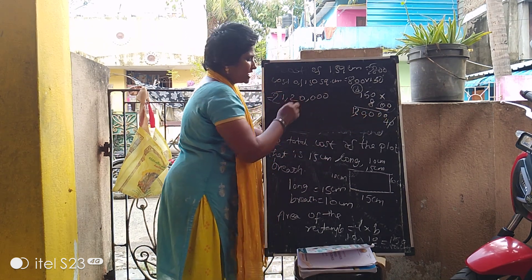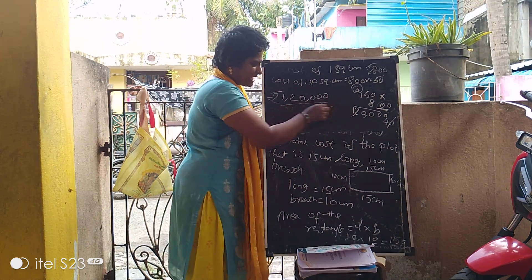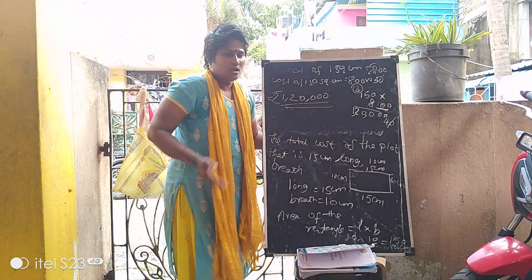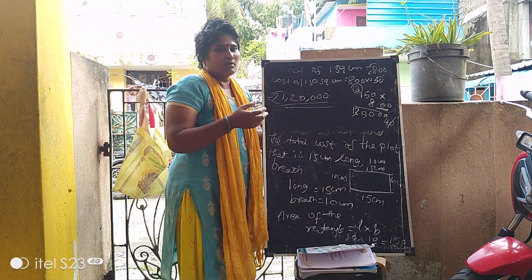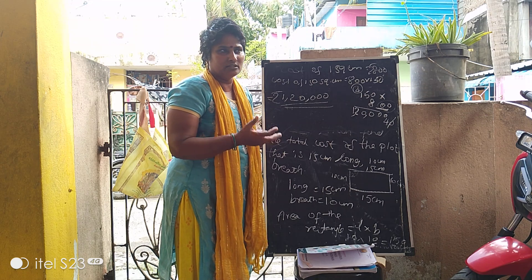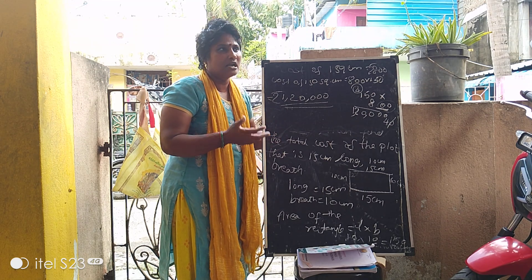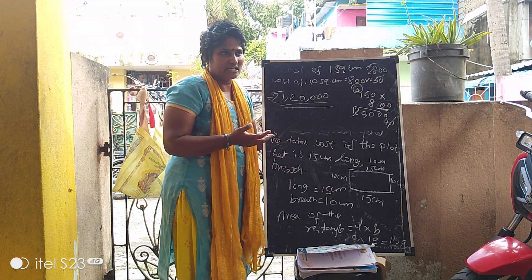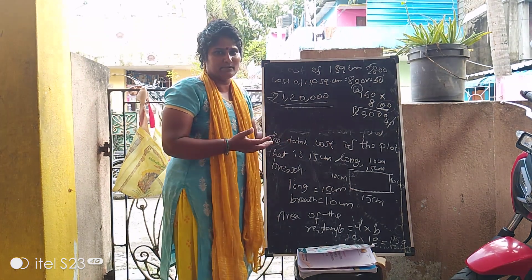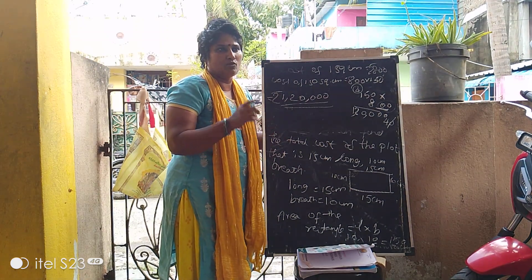1,20,000 rupees — this is the final answer. To find the total cost, find the area of the rectangle, then multiply by the cost of 1 square centimeter, which is Rs. 800. So 150 square centimeters into 800 gives 1,20,000 rupees.